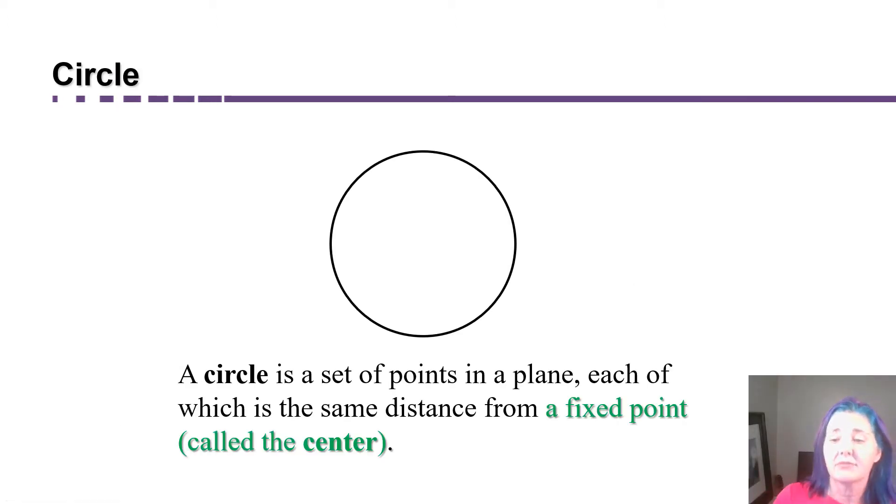A circle is defined to be a set of points that are all equidistant, the same distance, from a particular point which we call the center.